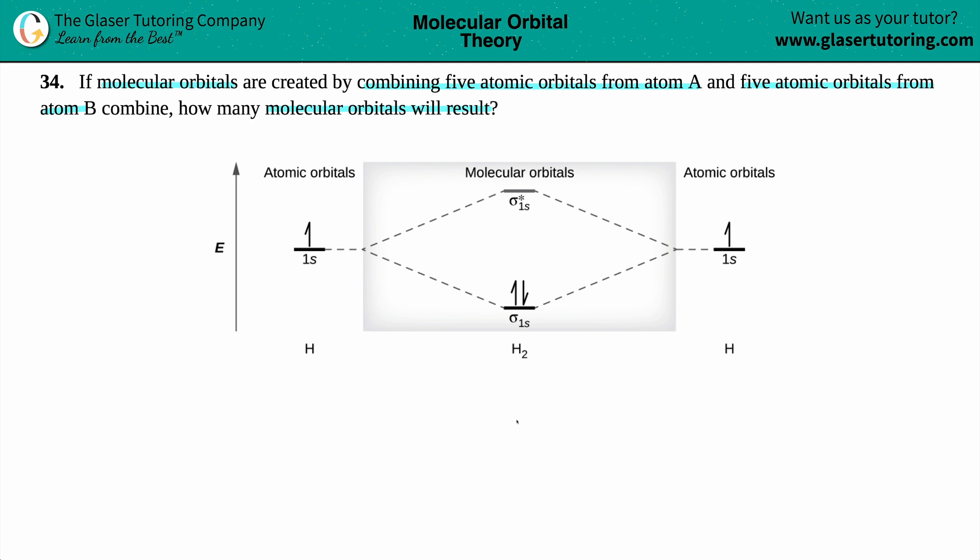Now, just like conservation of mass, right, the law of conservation of mass says that mass cannot be created nor destroyed, just transferred. The same idea goes for atomic orbitals and molecular orbitals. The total amount of atomic orbitals that you have equals the total number of molecular orbitals that can be produced.